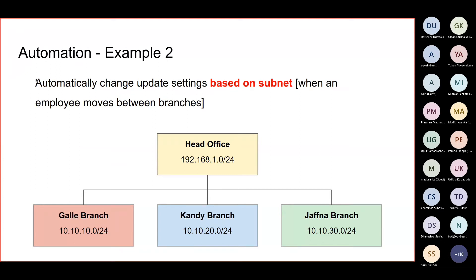Automatically changed update settings based on subnet when an employee moves between branches. Now I'll explain one of the technologies we use to minimize the update bandwidth used by ESET. To minimize that, we use a technology called HTTP proxy, which will download the update and cache it for use. For example, if we take the head office.